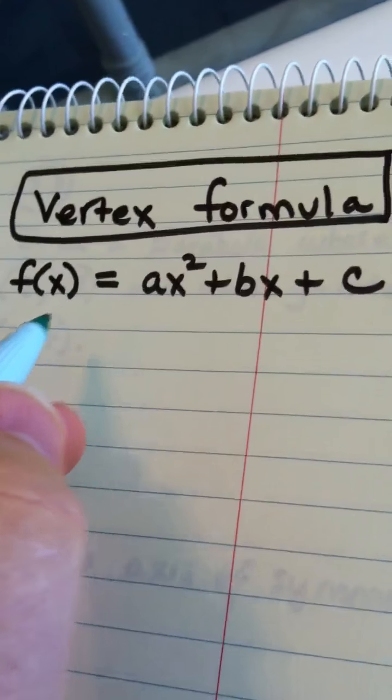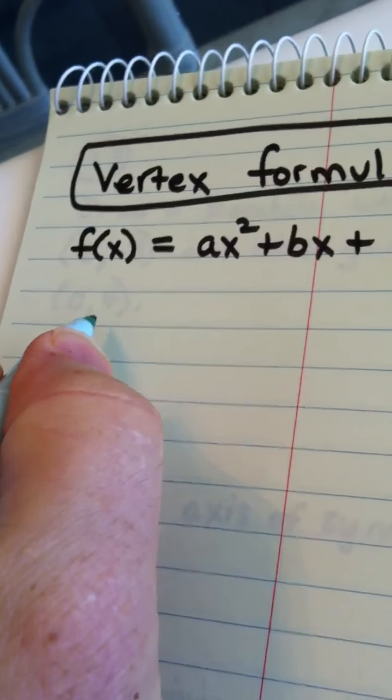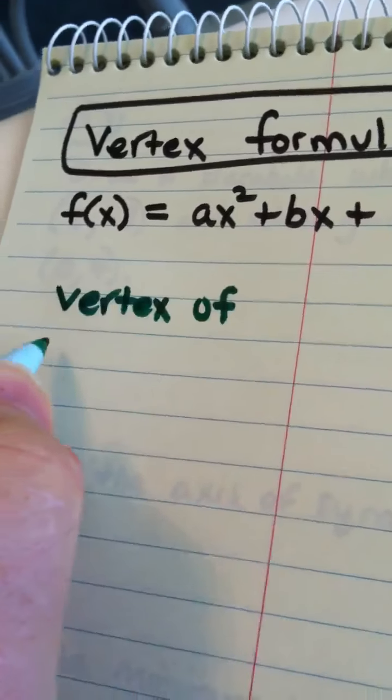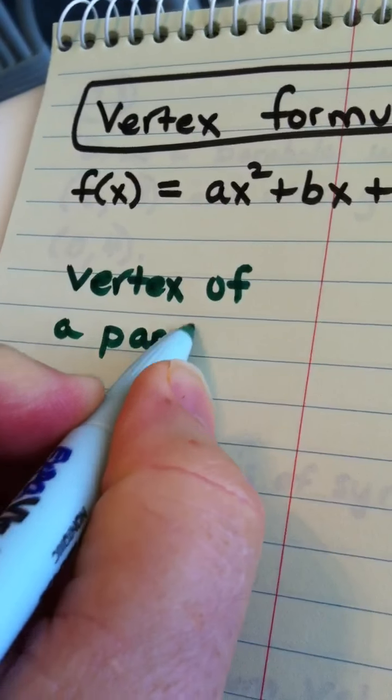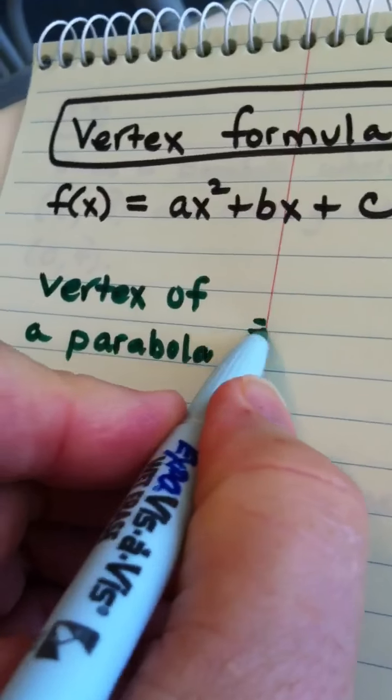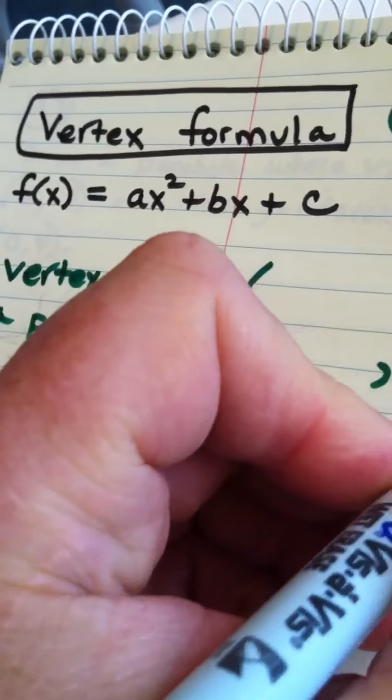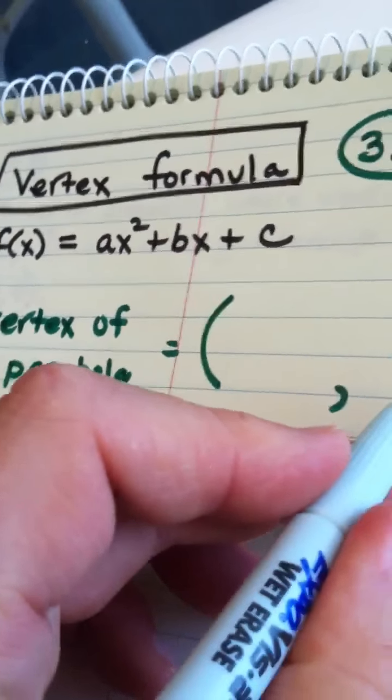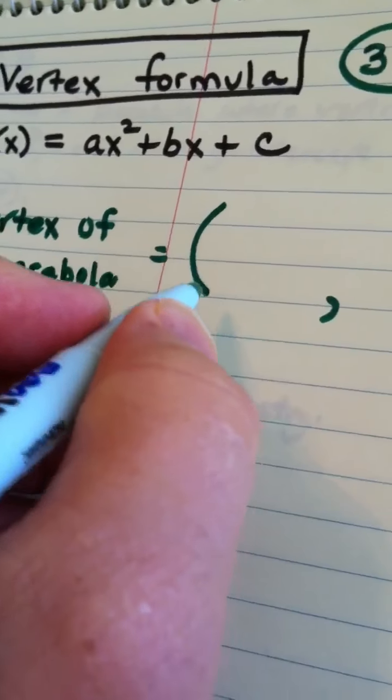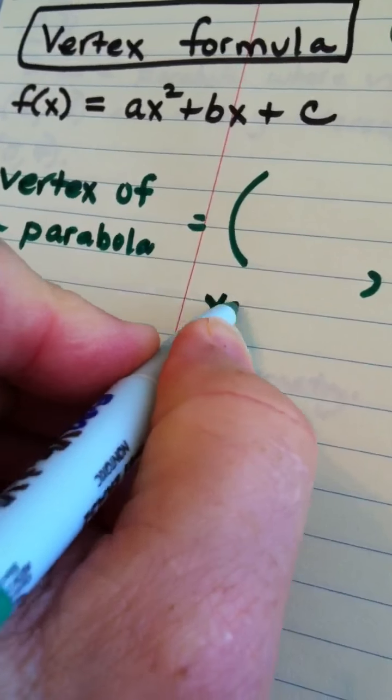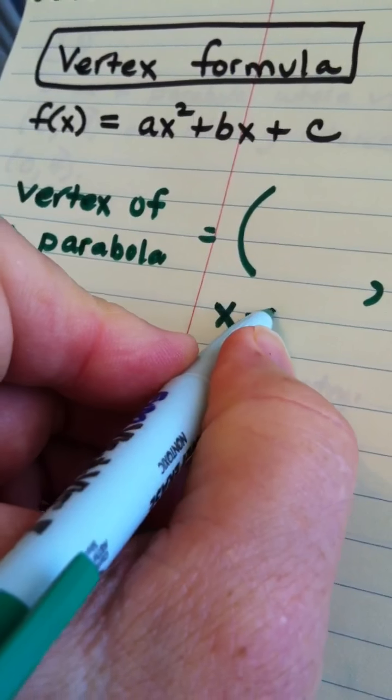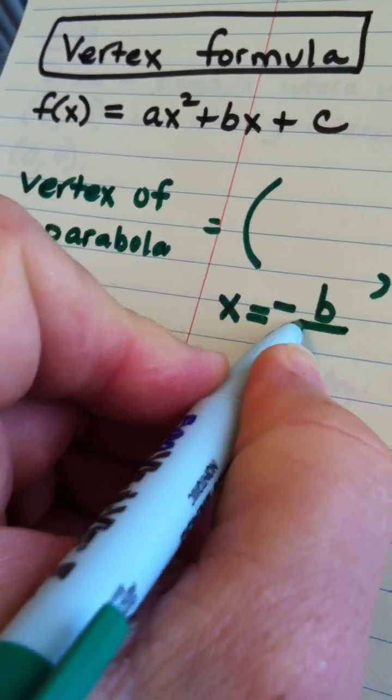Here's what you need to know about the vertex formula. To find the vertex of a parabola, you know that a vertex of a parabola has two coordinates. It has an x-coordinate and it has a y-coordinate. To find the x-coordinate, you use what's called the vertex formula, and to find it, that would be the opposite of b over 2a.